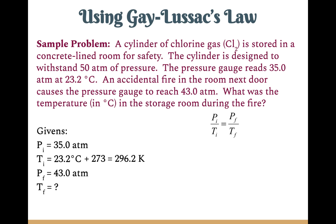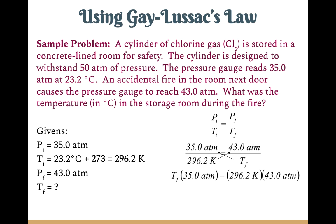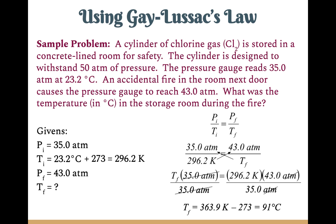Now we solve the problem. We start with the equation Pi over Ti equals Pf over Tf, and substitute in the known values: 35 atmospheres over 296.2 Kelvin equals 43 atmospheres over the unknown final temperature. Cross-multiplying gives Tf times 35 atmospheres equals 296.2 Kelvin times 43 atmospheres. Dividing both sides by 35, the final temperature is 363.9 Kelvin. Converting to degrees Celsius by subtracting 273 gives an answer of 91 degrees Celsius.